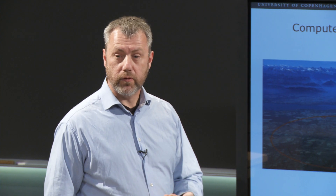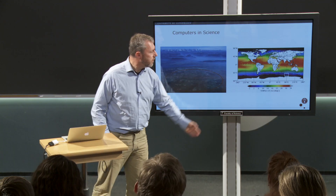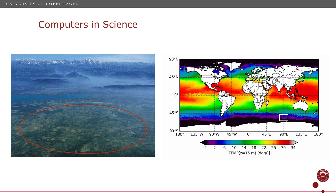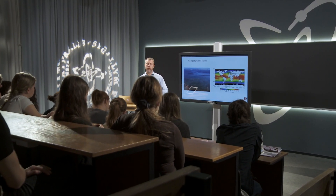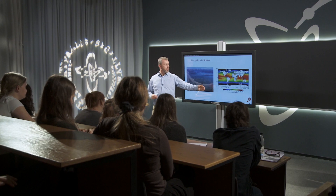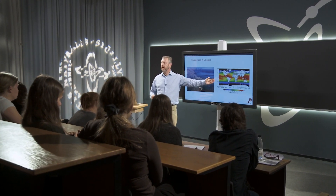The other thing we use supercomputers for is simulations. We have a nice scientific model of something and we'd like to know where it takes us. What we have here is a climate simulation where we can see all the ocean currents, and the idea is: what happens if global warming increases by half a degree centigrade? For that, we need to do a lot of forward simulations.